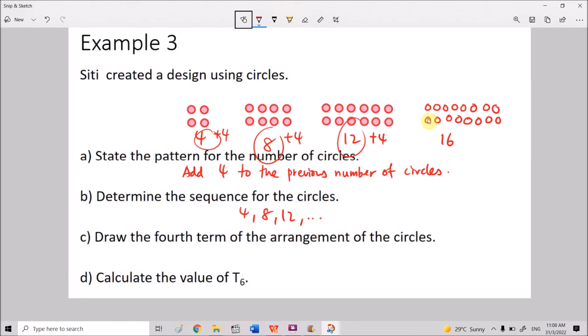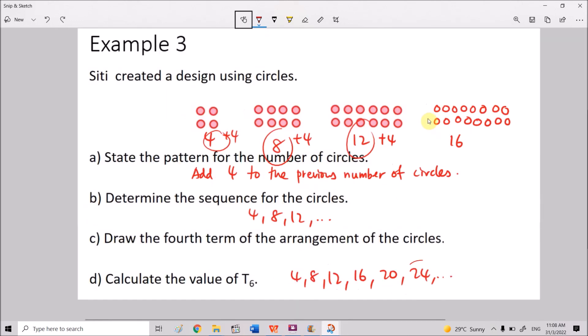And lastly, calculate the value of T6, which means the sixth term. So we have to extend our sequence here from 4 to 8, 8 to 12. Adding 4, we get 16. 16 plus 4, you get 20. 20 plus 4, you get 24. So this is the first term, T1, T2, T3, T4, T5, T6. Hence, T6 equals to 24. And this is the end of this video, which is also the last video for this chapter 1. I'll see you in the next video. Thank you everyone.